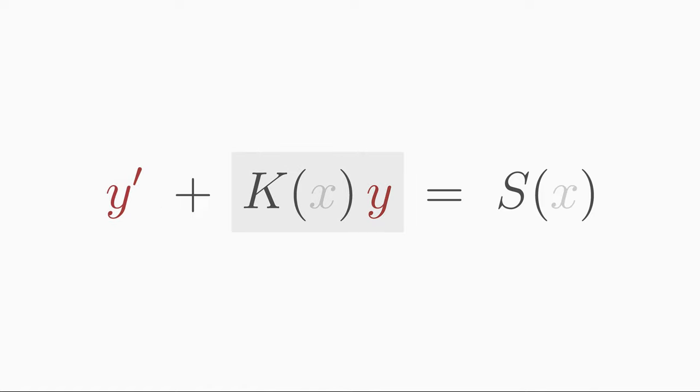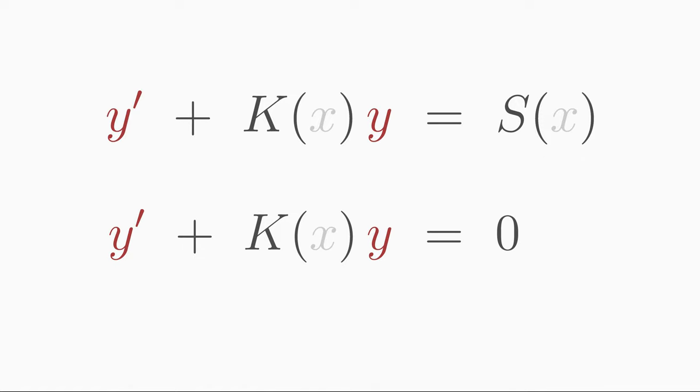y' plus K(x)y equals S(x). The inhomogeneous version differs from the homogeneous one only in the single coefficient, that is, the perturbation function s is not zero. Thus, this type of differential equation is somewhat more difficult to solve.